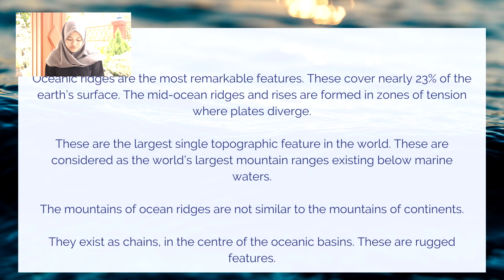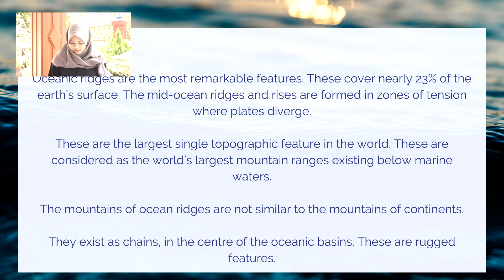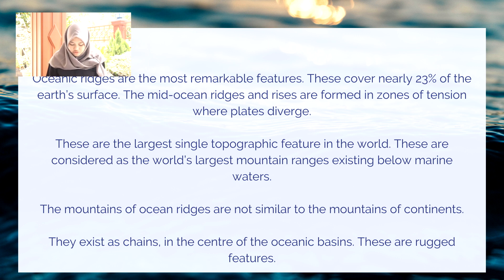Ocean ridges are the most remarkable features. These cover nearly 23% of the Earth's surface. The mid-ocean ridge and rise are formed in zones of tension where plates diverge. These are the large single topographic features in the world. These are considered as the world's largest mountain ranges. The mountains of the mid-ocean ridge are not similar to the mountains of the continents.